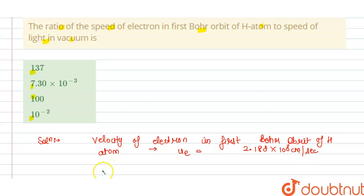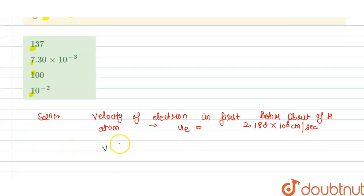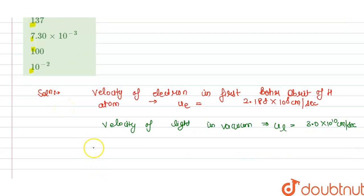velocity of light in vacuum, U_L, that is velocity of light, 3.0 × 10^10 centimeter per second. And we have to take the ratio here. So their ratio is